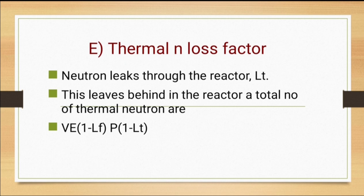The next step is the thermal neutron loss factor. Neutrons can be lost through the reactor, through the moderator material, through the coolant, or through other interactions. This leakage is given by Lt, where L represents loss and t represents thermal neutrons. Starting with 1 neutron and losing Lt, the remaining thermal neutrons in the system will be (1 minus Lt). Multiplying this in, the equation becomes ν into epsilon into (1 minus Lf) into p into (1 minus Lt).